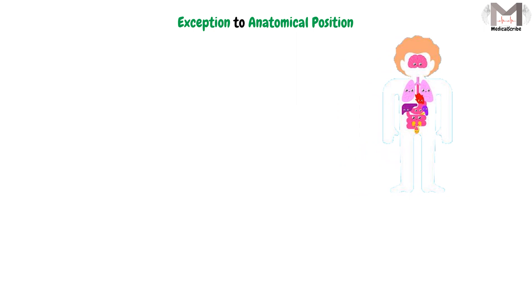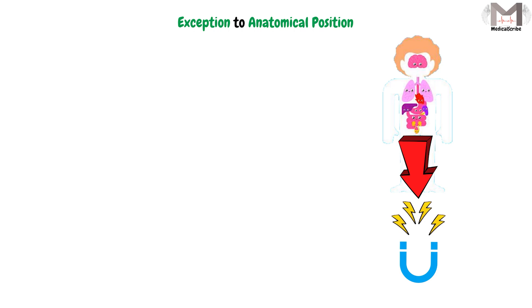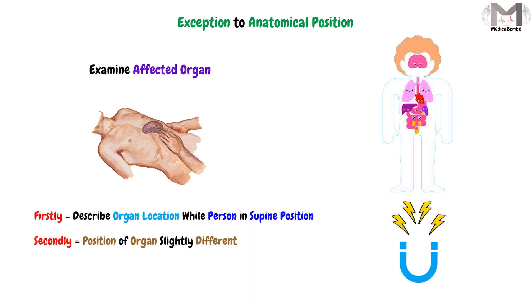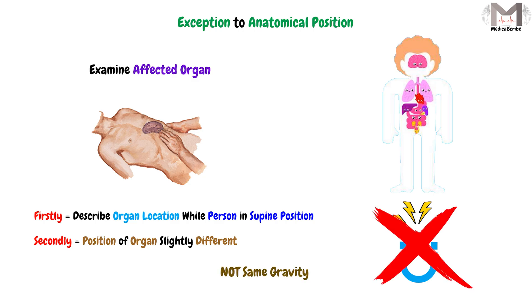Finally, we have to keep in mind that there is an exception to this anatomical position. When we describe the internal organs of a person while he stands upright, gravity causes a downward shift for these internal organs. But when we examine an affected organ, the person is typically in a supine position. That means we will describe the organ location while the person is lying down, and the position of the organ will be slightly different, because there will not be the same gravity on the organ as when the person was standing. This is almost all exceptions in anatomical position.